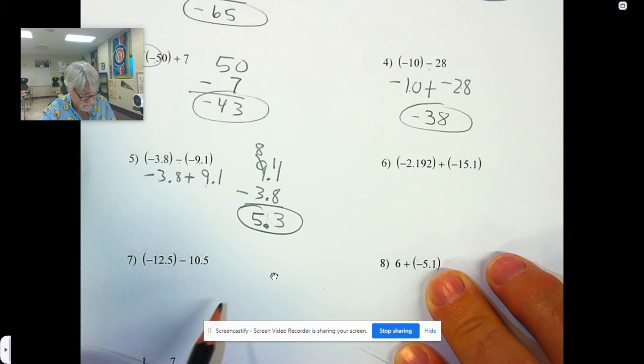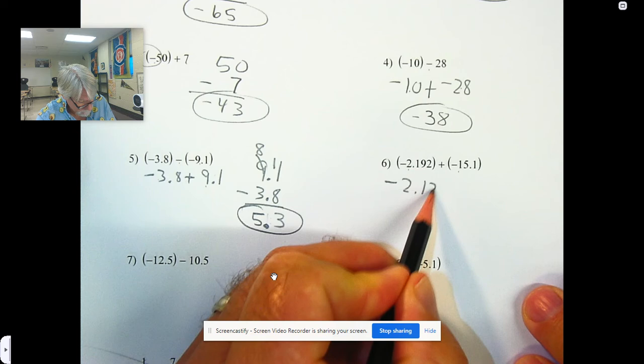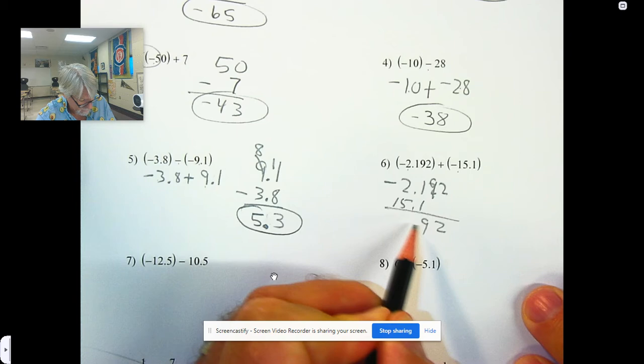Now, is this positive or negative? Well, the largest absolute value is positive. So my answer is positive. Adding numbers with the same signs, just add them and use that sign.